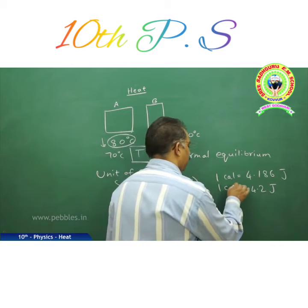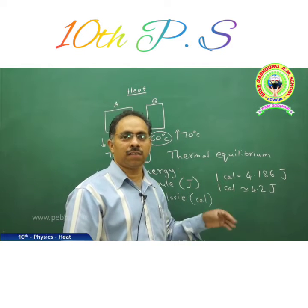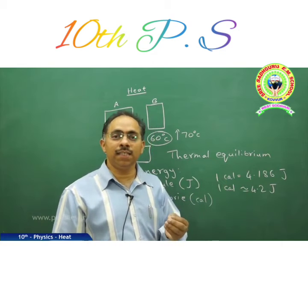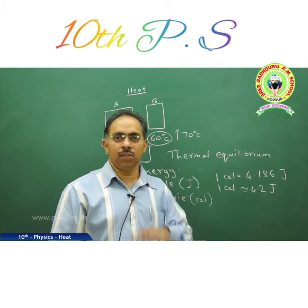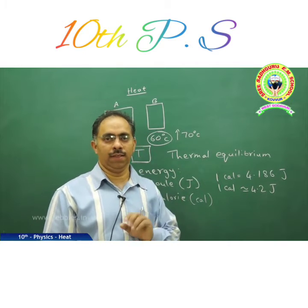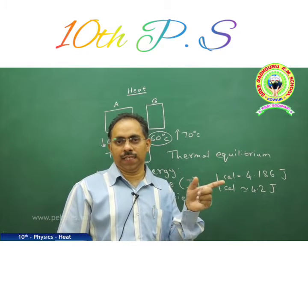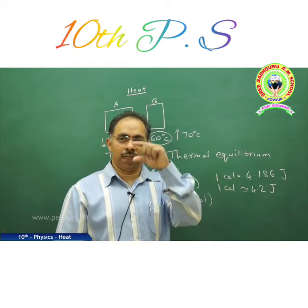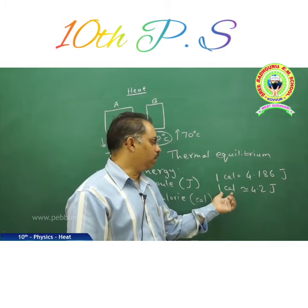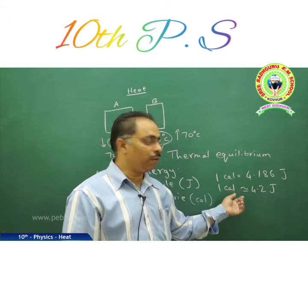When 1 calorie equals 4.2 joules, which is the bigger unit? The bigger the number, the smaller the unit. For example, 1 kilometer equals 1000 meters — here the number 1 is smaller, so the kilometer is the bigger unit. Applying the same principle: here we have 1 and 4.2, and 4.2 is bigger than 1, so joule is a smaller unit compared to calorie.